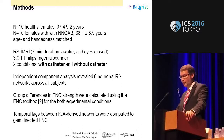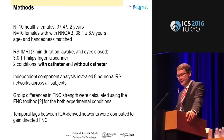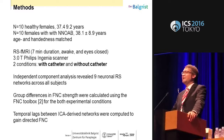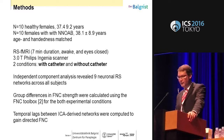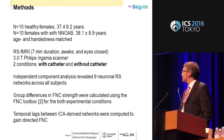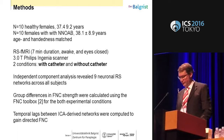We recruited 10 non-neurogenic or idiopathic OAB patients and had an age-matched and handedness-matched control group — all were right-handed. We investigated them in a 3T Philips MRI scanner under two conditions: with catheter and without catheter. We wanted to investigate if the catheter, which we usually place for later investigations, already influences brain activity. We performed an independent component analysis, which showed nine neuronal resting state networks across all subjects, and evaluated group differences in functional network connectivity, including directed functional connectivity based on temporal lags between components.